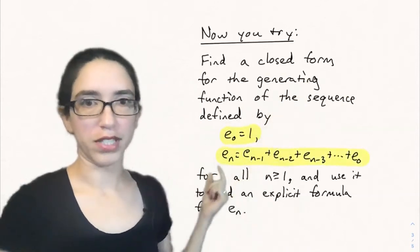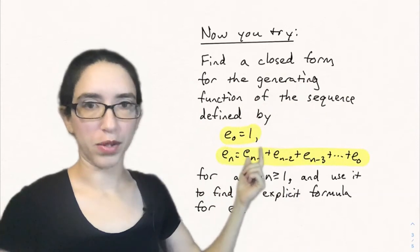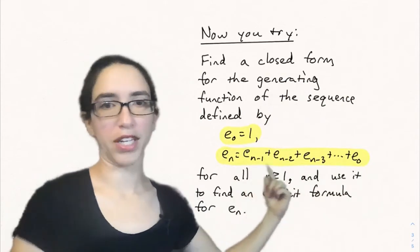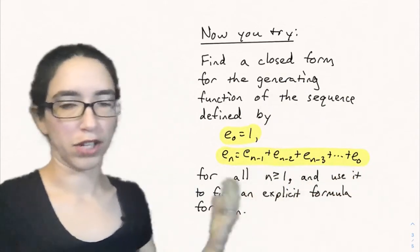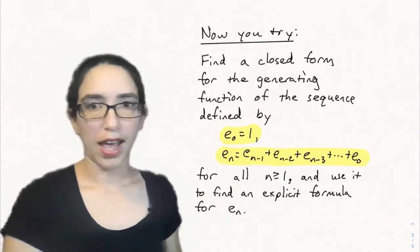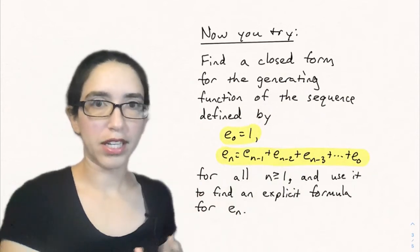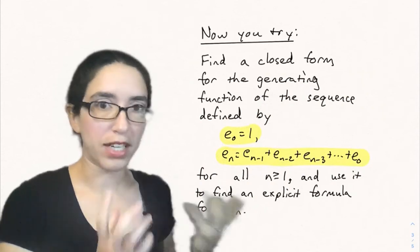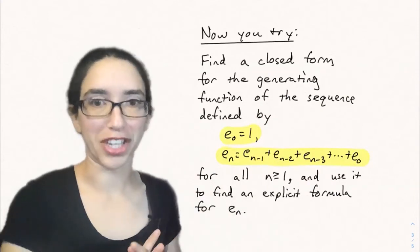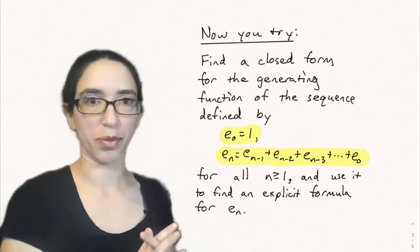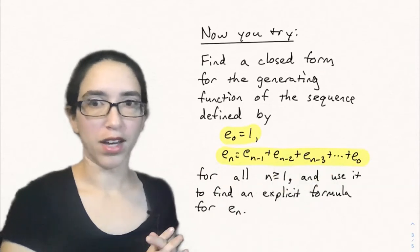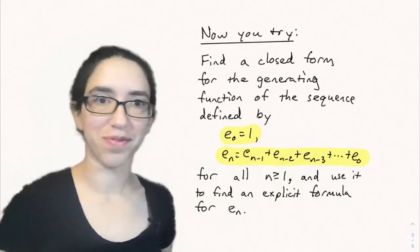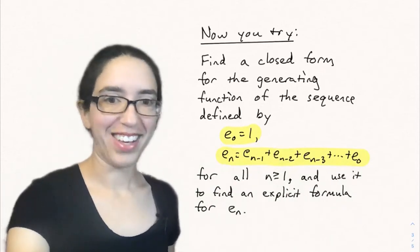Now you try: for a different recursion, find a closed form for the generating function of the sequence defined by e0 equals 1 and e_n equals the sum of all previous terms — e_{n-1} plus e_{n-2} down to e0 — for n at least 1. Find a closed formula for this generating function and see if you can use it to find an explicit formula for e_n. We've seen this sequence before, but the challenge is to use generating functions. Remember that multiplying by 1 over (1 minus x) gives you partial sums, and that might come in handy. That's all for today — see you next time.